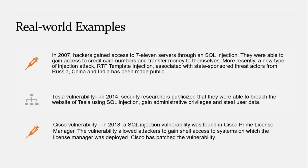Also in 2018, British Airways was attacked by a high-profile hacker group who exploited an XSS vulnerability in a JavaScript library used on the British Airways website. This resulted in the group successfully skimming credit card information on booking transactions before the breach was uncovered.